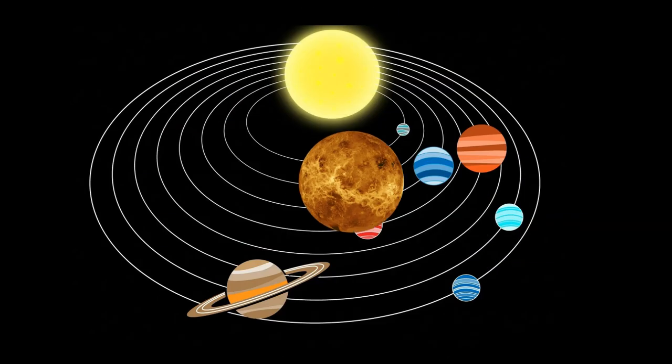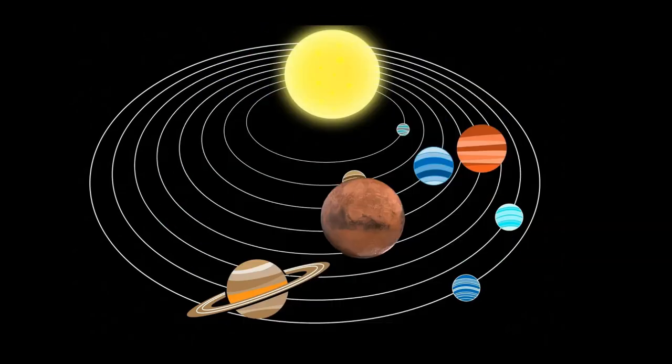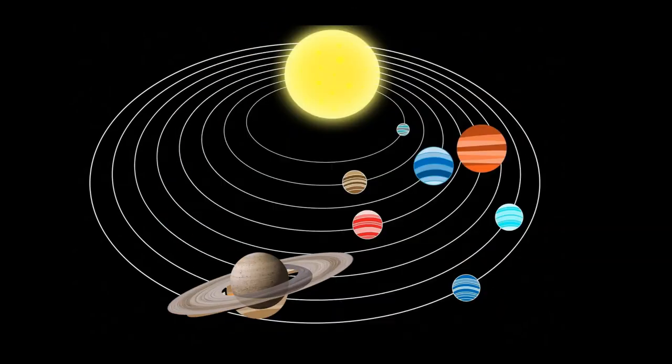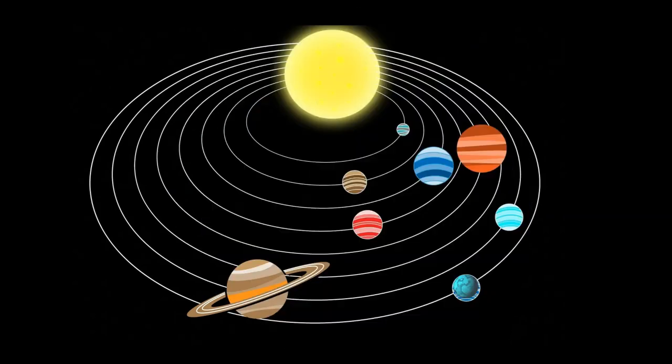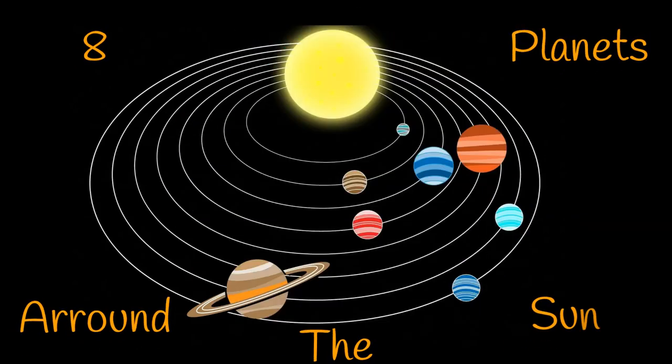Mercury, Venus, Earth, Mars, Jupiter, Saturn, Uranus, Neptune. Eight planets around the Sun. Eight planets around the Sun.